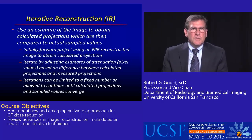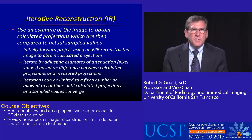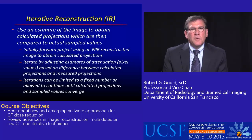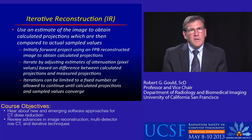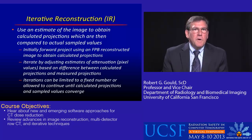Iterative reconstruction uses an estimate of the image to obtain calculated projections, which are then compared to the actual sampled values. You initially do what's called a forward projection — likely on the filtered back projection image that you've reconstructed — to obtain calculated projections.